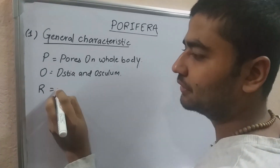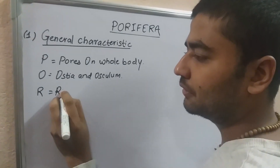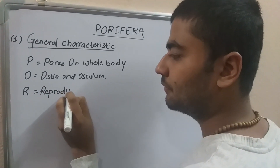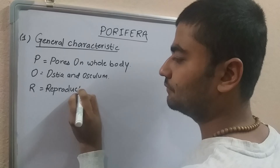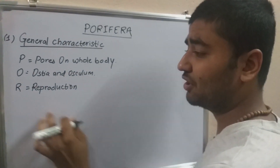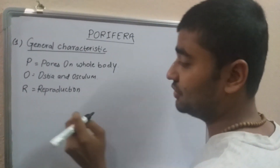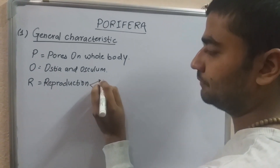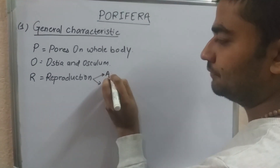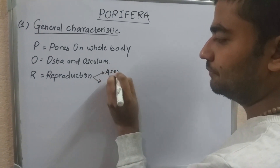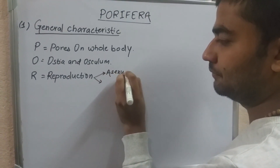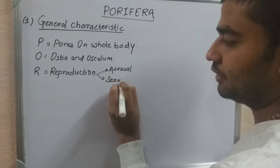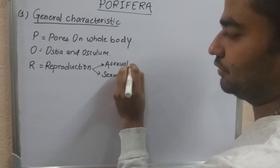Regarding reproduction, it is of two types: asexual and sexual. Porifera can reproduce by both asexual and sexual means.